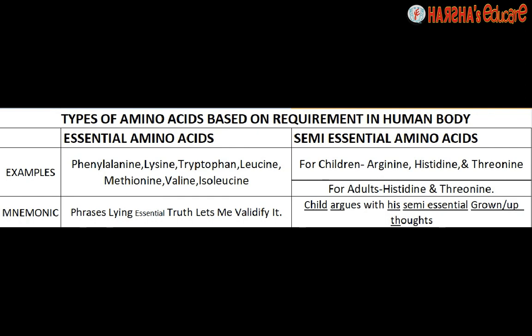Now for semi-essential amino acids — this is slightly more complex. For children, the semi-essential amino acids are Arginine, Histidine, and Threonine. However, for adults, Arginine is no longer semi-essential; it becomes a non-essential amino acid. So for adults, only Histidine and Threonine remain as semi-essential.